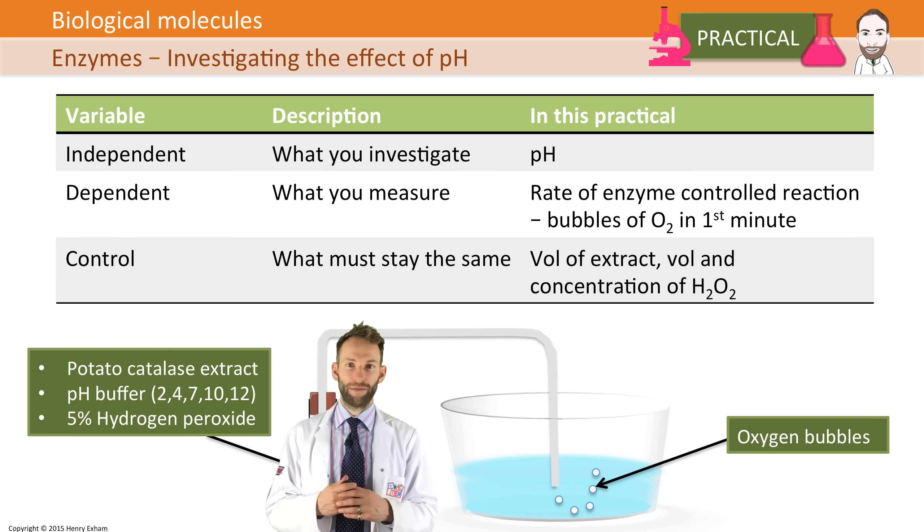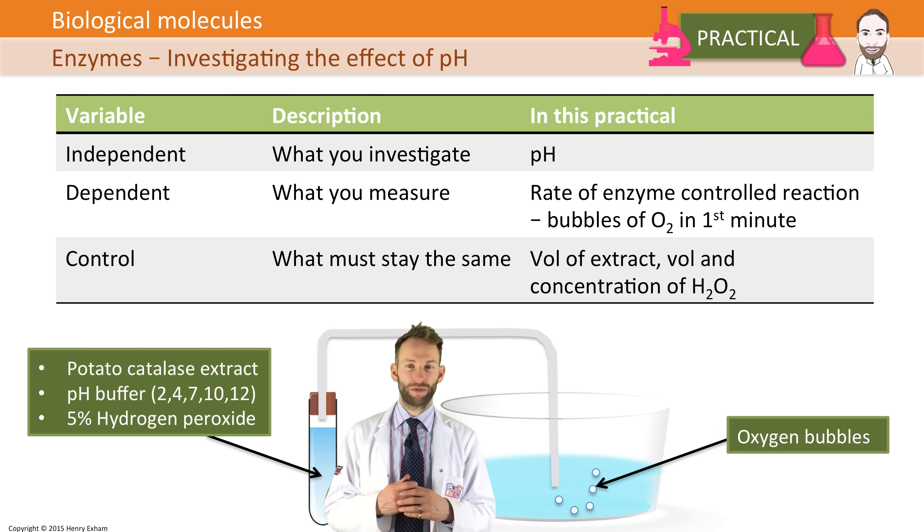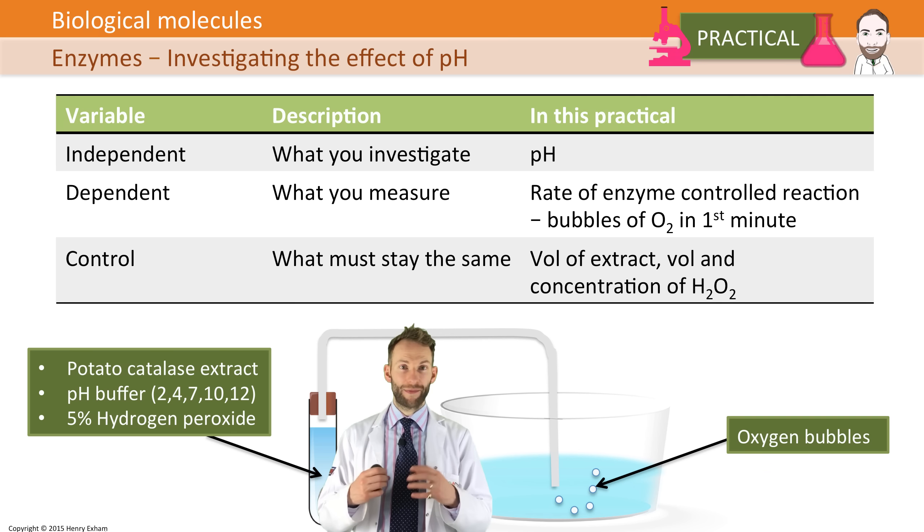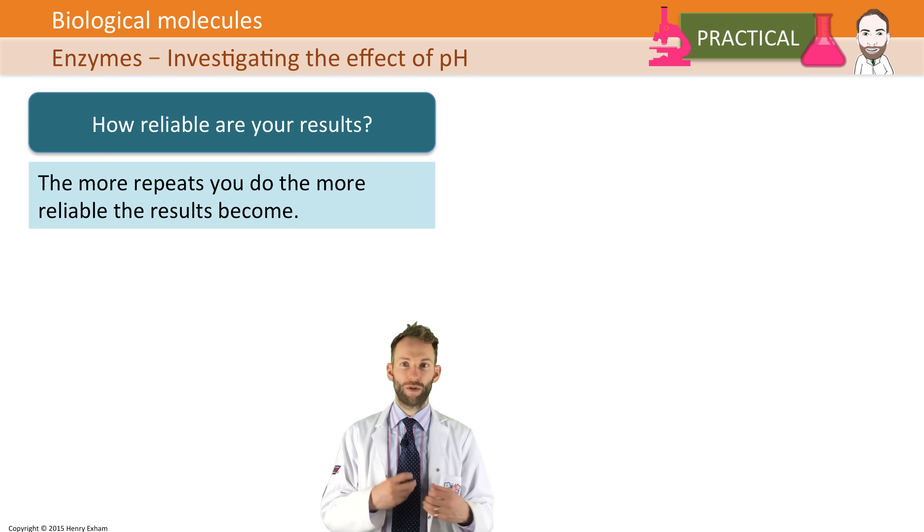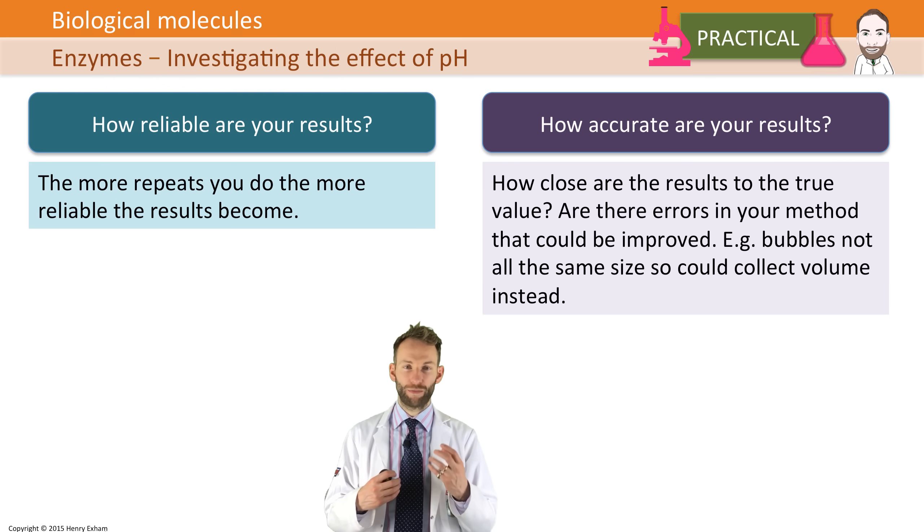In order to make an experiment more reliable, it's all about repeats. Do your experiment ten times - it's much more reliable than if you did it once. In order to make it more accurate, you need to maybe think about more accurate ways of collecting the dependent variable, which is the oxygen bubbles in this case. You might want to actually collect the volume rather than just count the number of bubbles.